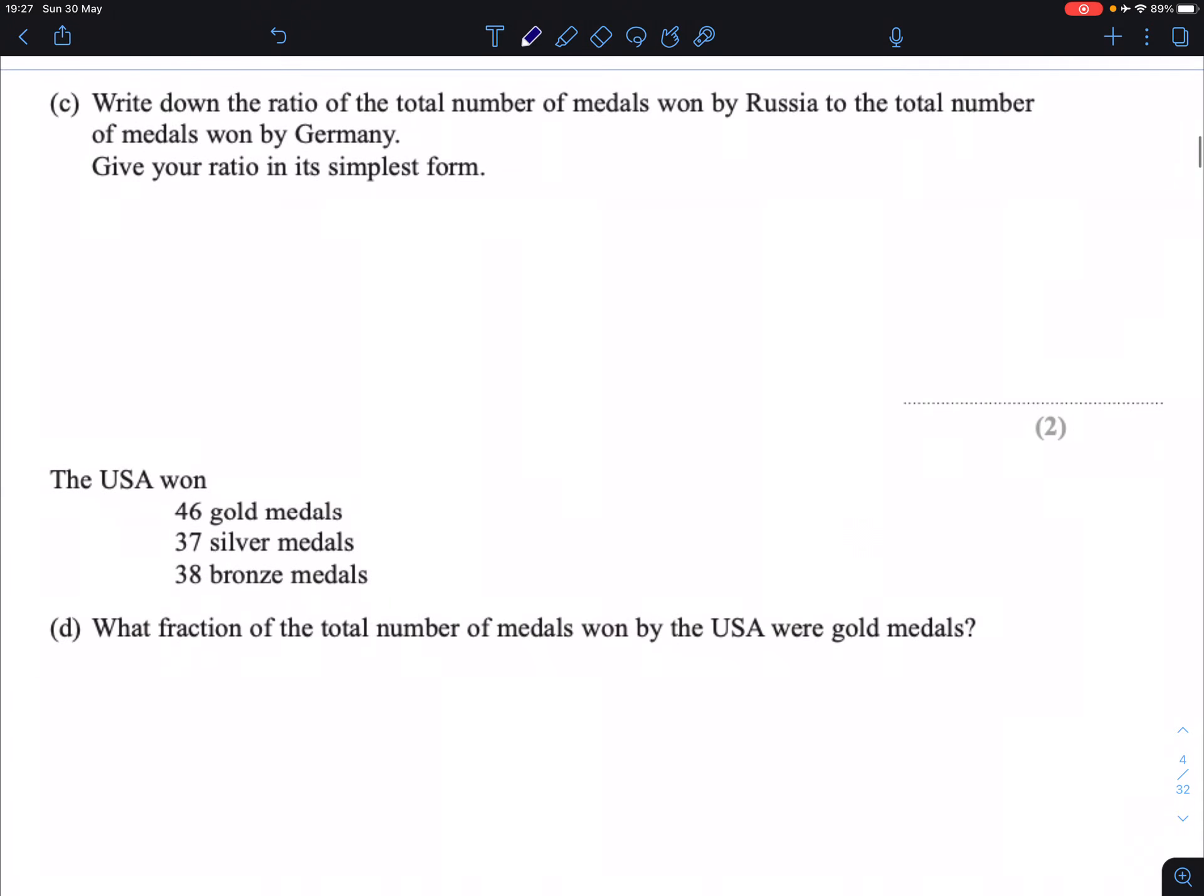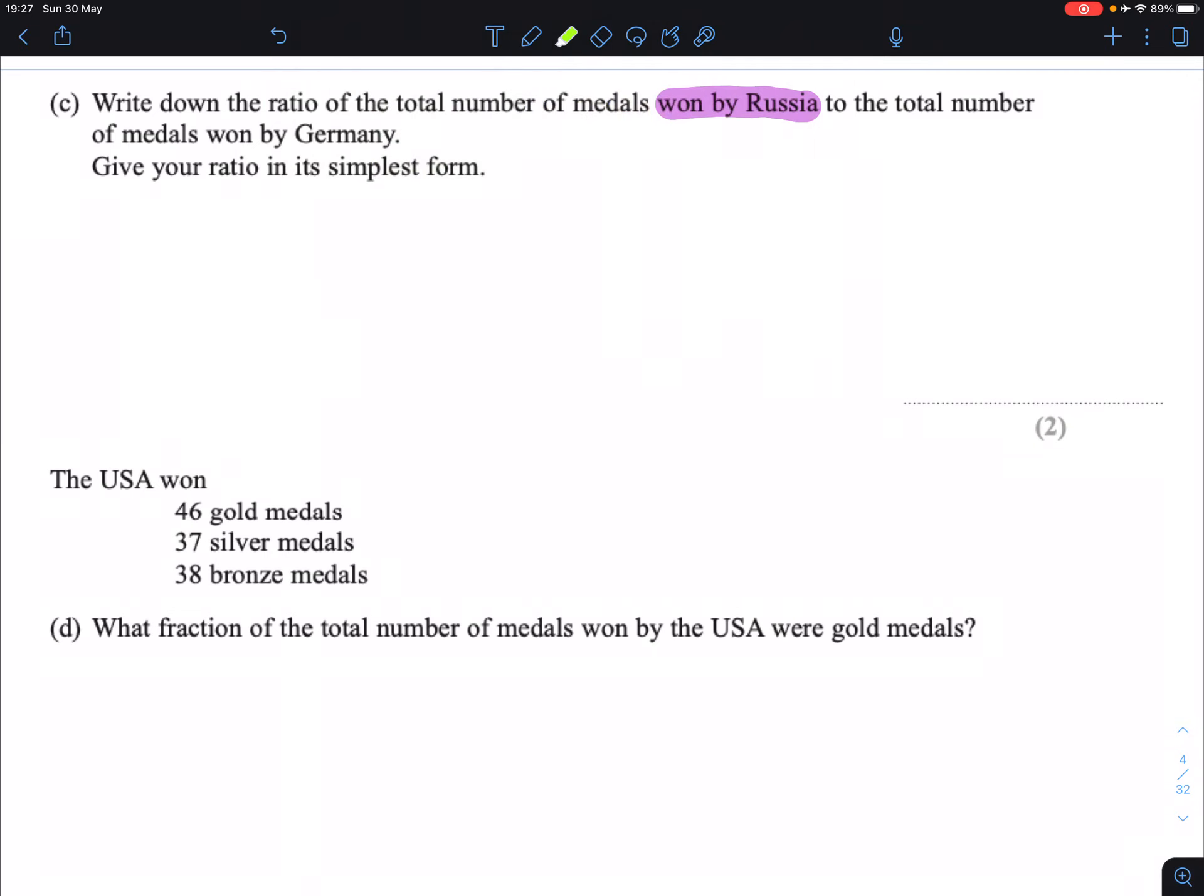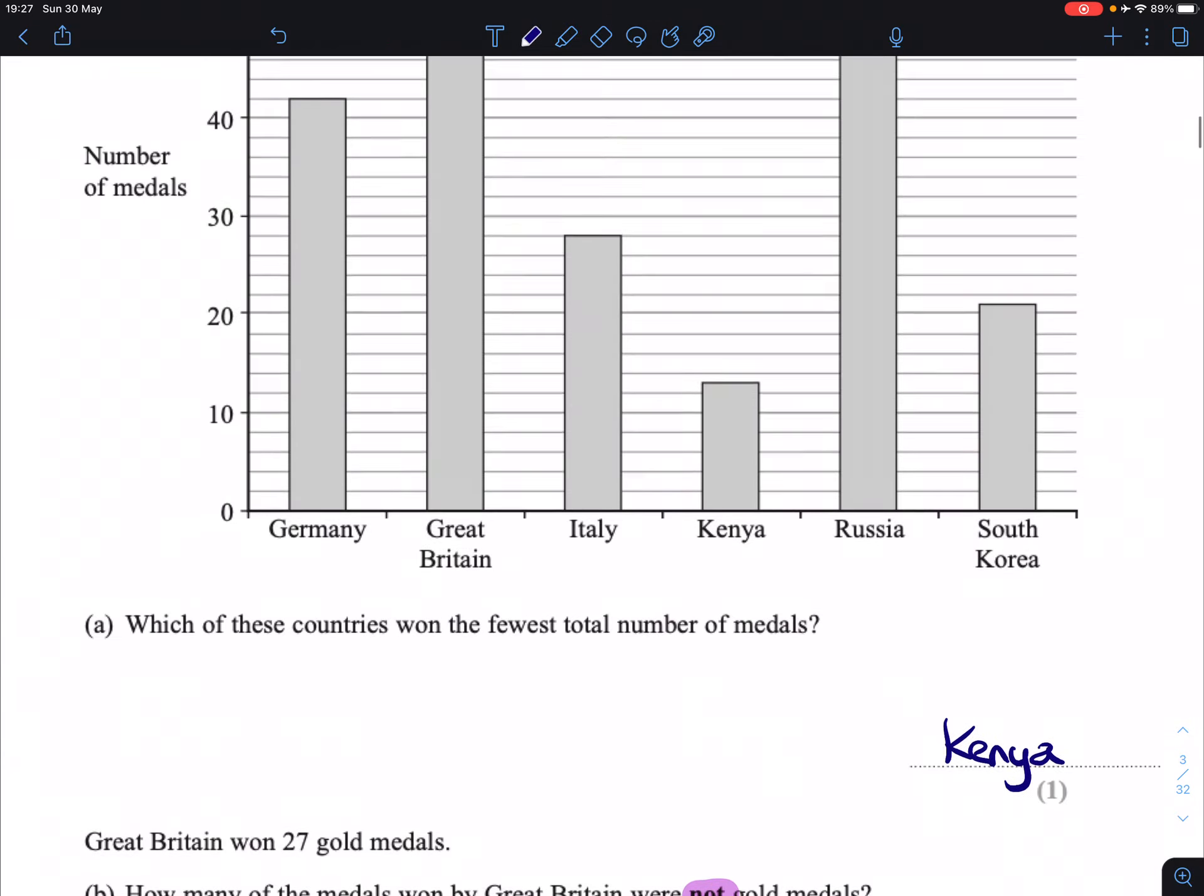Part C. Write down the ratio of the total number of medals won by Russia to the total number of medals won by Germany. We look at the heights of Russia and Germany first of all.